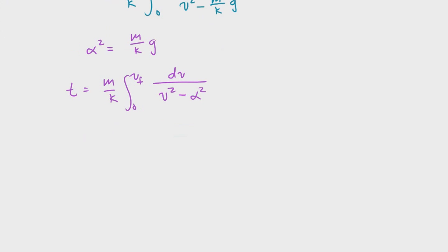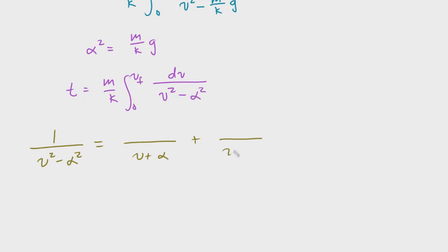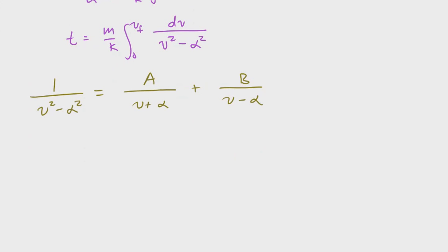So T equals M over K from 0 to V final, DV over V² minus alpha². Now we can do partial fraction decomposition. We take 1 over (V² minus alpha²) and decompose it using its factors: 1 over (V plus alpha)(V minus alpha), defining constants A and B. To satisfy this fraction, we multiply each side by the opposite factor — V minus alpha on one side, V plus alpha on the other.